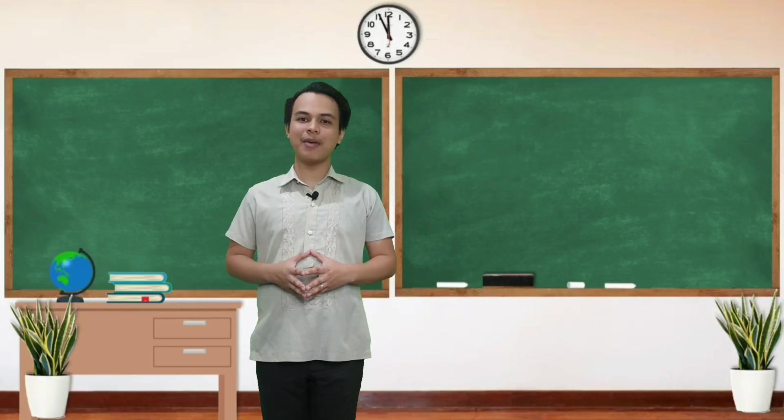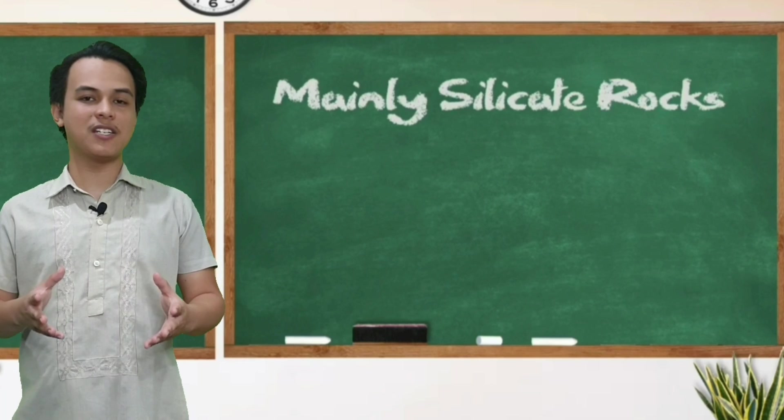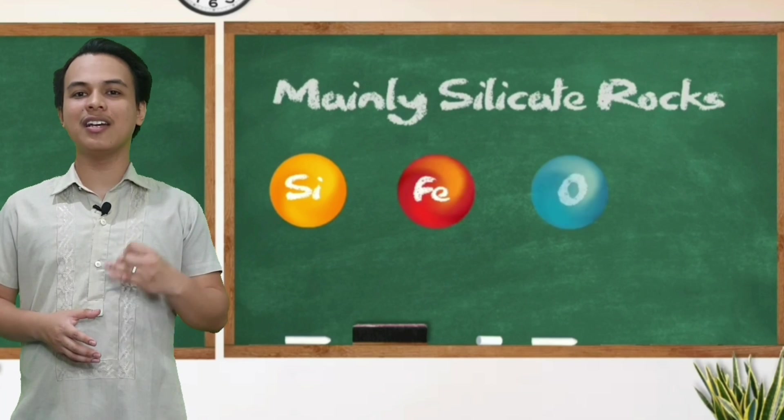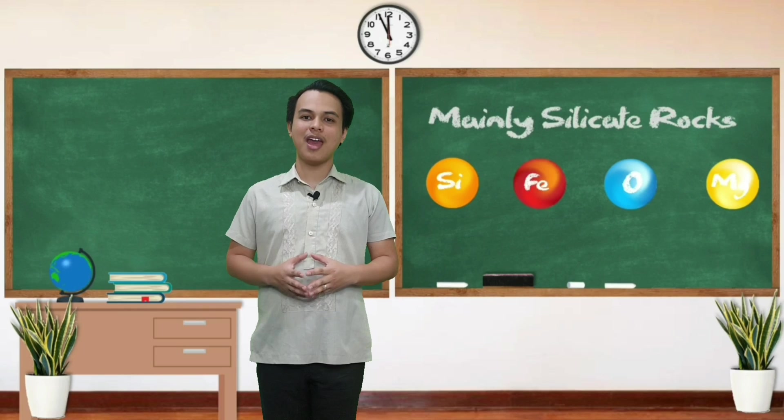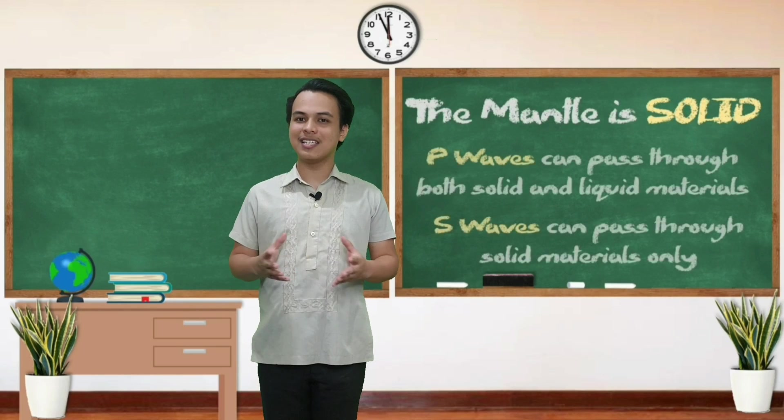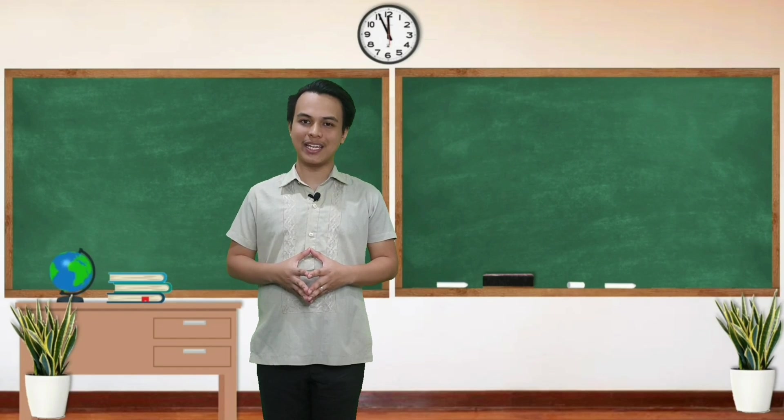The mantle is mainly made up of silicate rocks. Specifically, ang elements na silicon, iron, oxygen, at magnesium. And contrary to common belief, ang mantle ay solid since ang S waves at ang P waves can pass through it.